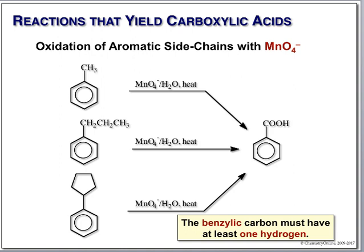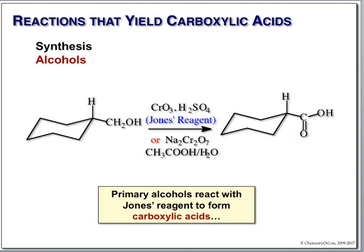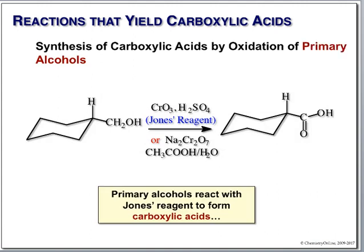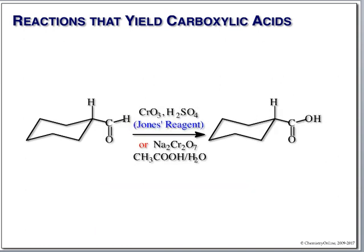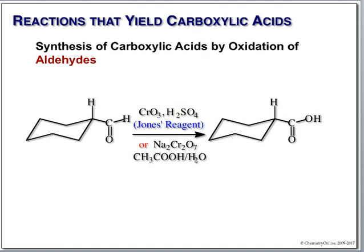In Chapter 17, we talked about Jones reagent. If you had a primary alcohol, acidic chromate oxidizes it all the way to the carboxylic acid. We were trying to get to aldehydes at the time, but chromic acid is strong enough that it does not stop at the aldehyde stage — it goes all the way to the carboxylic acid. We can also start with an aldehyde; the aldehyde is an intermediate that is instantly oxidized by chromate to the carboxylic acid.